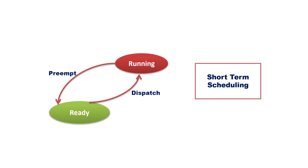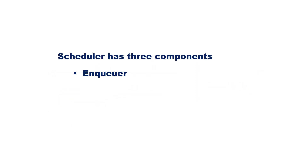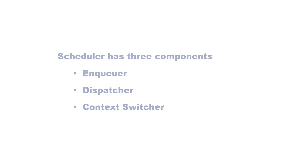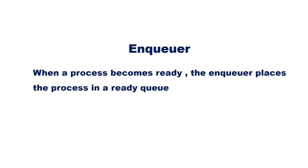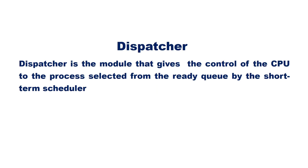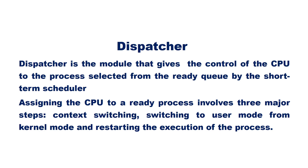A scheduler has three logical components: enqueuer, dispatcher, and context switcher. When a process becomes ready, the enqueuer places the process in the ready queue. The dispatcher is a module that gives control of the CPU to the process selected from the ready queue by the short-term scheduler.